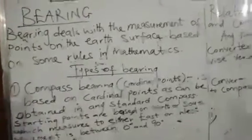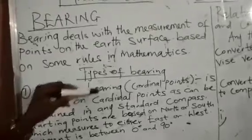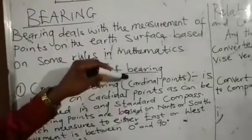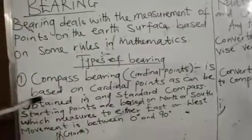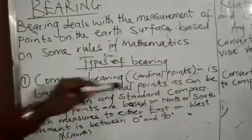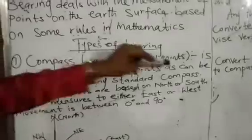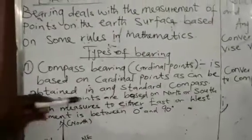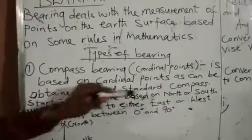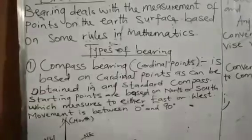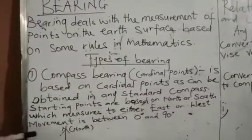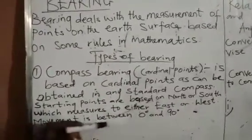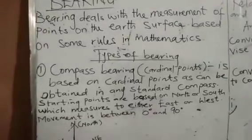We have types of bearing. One, we have the compass bearing, which can also be known as the cardinal point. Compass bearing is based on cardinal points, as can be obtained in any standard compass. Starting points are based on north or south, which measures to either east or west. Movement is between zero degrees and ninety degrees.